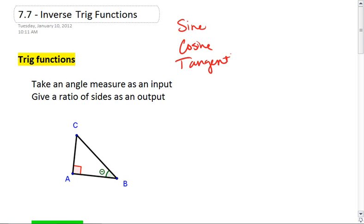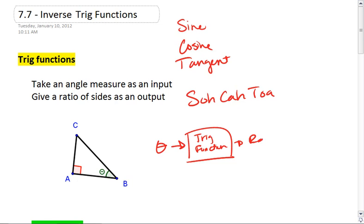Each of these trig functions takes an angle measure as its input and gives a ratio of sides as its output. That's where we get SOHCAHTOA. Basically, what we do is we have an angle measure, we plug it into our trig function, and we get some ratio as our output.